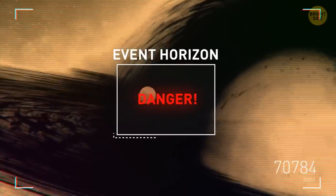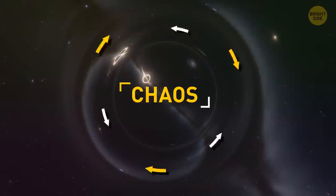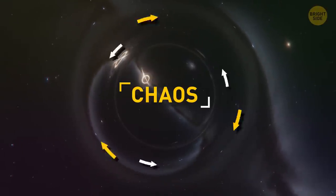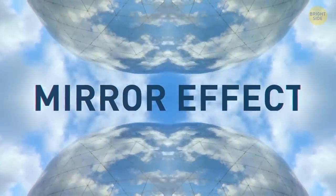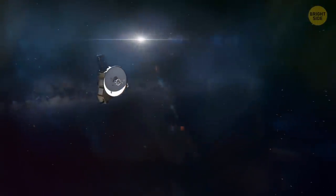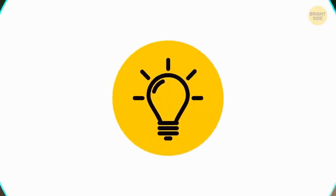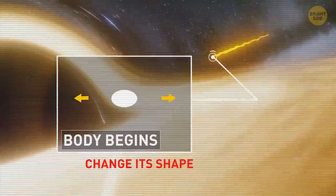Once you reach the event horizon, though, you won't be able to get back out. You may also notice that there's some kind of chaos in this ring. Some lights move in different directions. This happens because you get a mirror effect. But we still don't know what's inside the black hole. So you decide to send in a drone first. The gravity field of the black hole quickly draws in your metal buddy. As soon as he enters the event horizon, his body begins to change its shape.